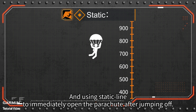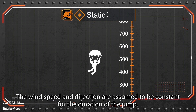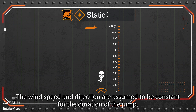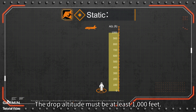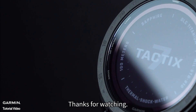Static: the jump master jumps from a low altitude and uses a static line to immediately open the parachute after jumping. Wind speed and direction are assumed to be constant for the duration of the jump. The drop altitude must be at least 1,000 feet.